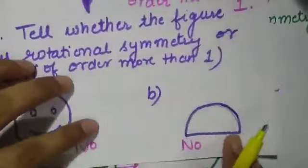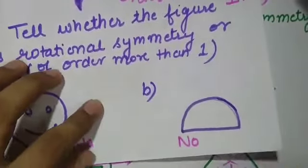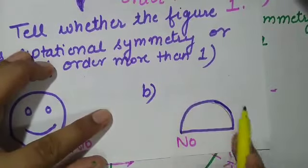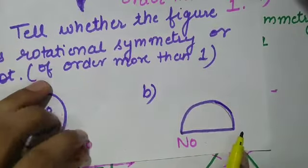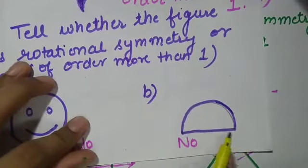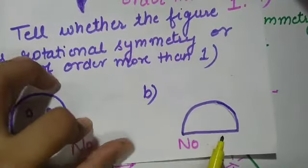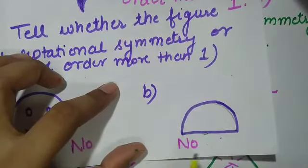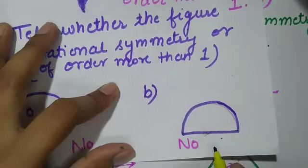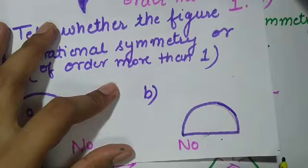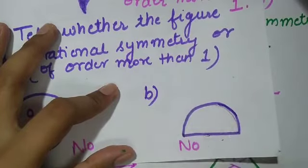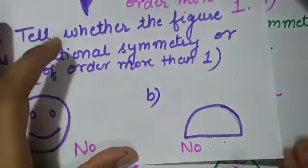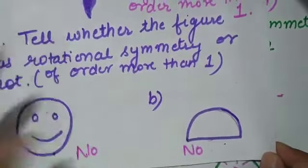Come to the next part — a semicircle is given. A semicircle does not have rotational symmetry of order more than 1. On rotating this figure through the center, there is no angle at which the figure looks the same as the original one. The rotated figure should be same as the original one, so this figure does not have rotational symmetry of order more than 1.